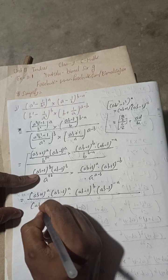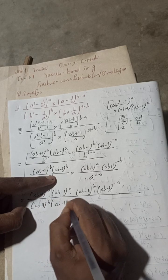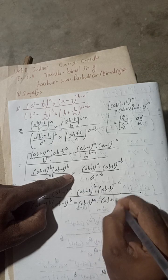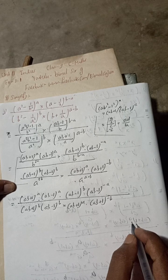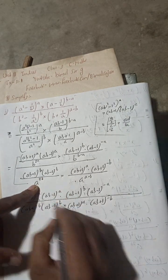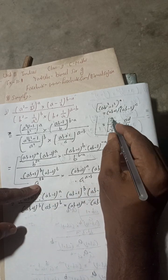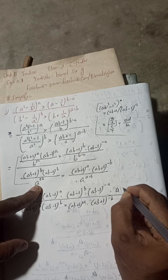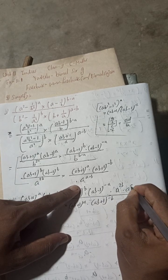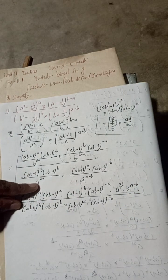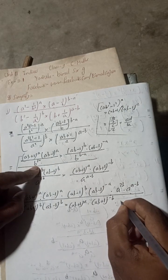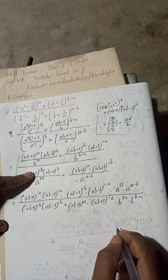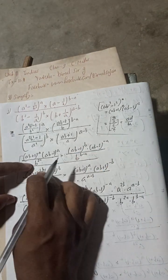So this is: (ab+1) to the power b, (ab−1) to the power b, into (ab+1) to the power a, (ab+1) to the power minus b. And this part: a to the power 2b, into a to the power (a−b). And down: b to the power 2a, into b to the power (b−a).